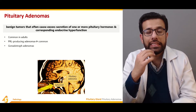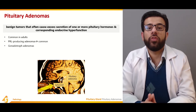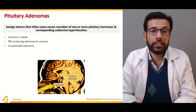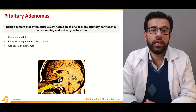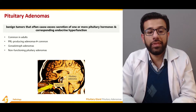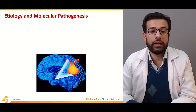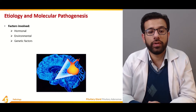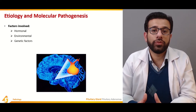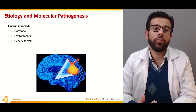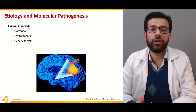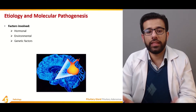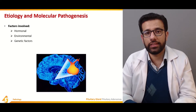Certain cells are responsible for the release of respective hormones. Gonadotrophs are responsible for the release of growth hormones, and there can also be non-functioning pituitary adenomas. Regarding etiology and molecular pathogenesis, three factors are involved: humoral factors, environmental factors, and certain genetic defects or mutations that play a role in the molecular pathogenesis of the adenomas.